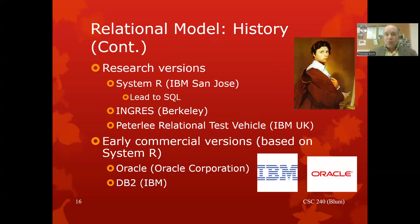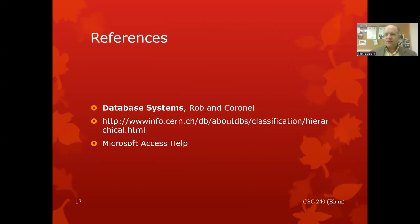When the relational model came along, a number of systems started to develop on it — System R, Ingres, and later Oracle and DB2 — well-known names in the database world building on the relational model. And that's it for this one. Thanks for your attention.